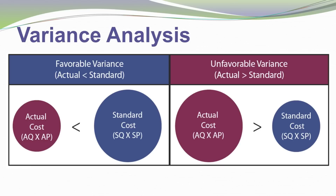If actual costs are less than standard costs, we say we have a favorable variance, and conversely, if actual costs are greater than standard costs, we have an unfavorable variance. But variance analysis digs deeper than this. It's not sufficient to simply say we spent more or less than standard.